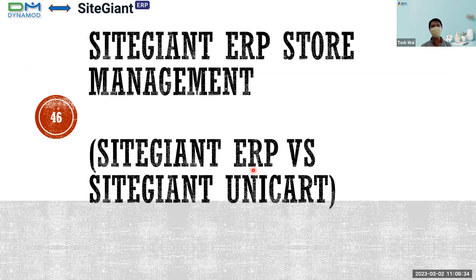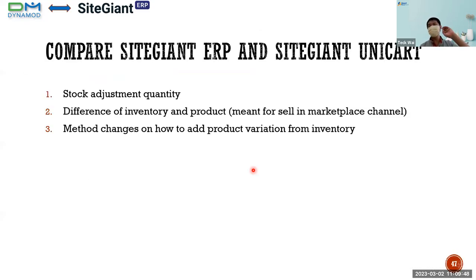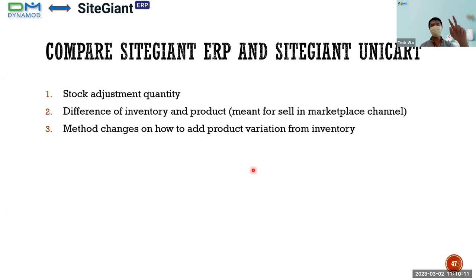This is the final topic today — the difference between SiteGiant ERP and SiteGiant UniCard. There are three main differences: first, stock quantity adjustment; second, the difference between inventory and product — in SiteGiant UniCard it is called inventory, but in SiteGiant ERP it has been separated into inventory and product; and third, the method to add product variants from the inventory has been changed.